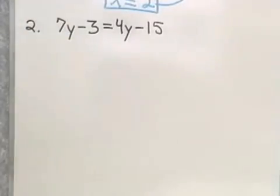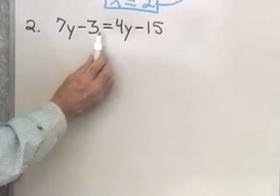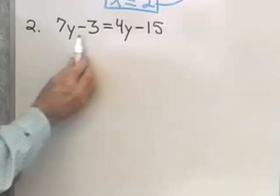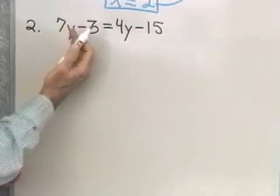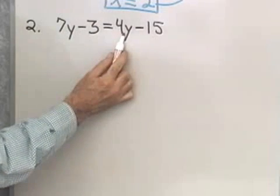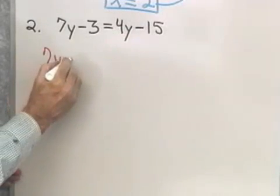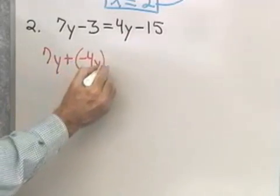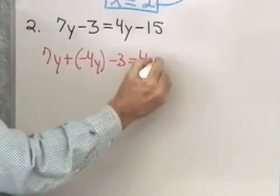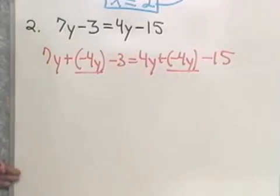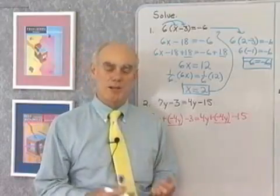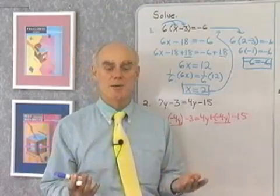Here's our next problem: 7y minus 3 is equal to 4y minus 15. Variable terms have the variable in them; constant terms do not. I want to get all the variable terms on one side and all the constant terms on the other. I'm going to start by getting rid of the 4y on the right side by adding its opposite, negative 4y, to both sides.